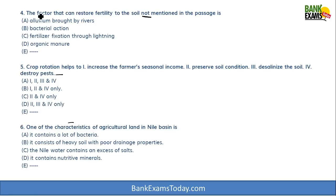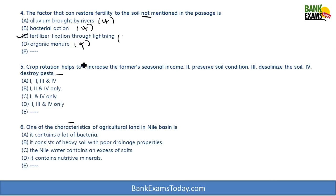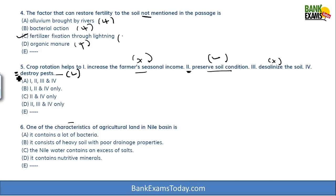Question 4 — factor NOT mentioned in the passage for restoring fertility: alluvium brought by rivers was mentioned, bacterial action was mentioned, organic manure was mentioned, but fertilizer fixing through lightning was not mentioned. So C is correct. Question 5 — how crop rotation helps: it preserves the soil's condition, and it destroys pests. So the second and fourth options are correct — answer C.